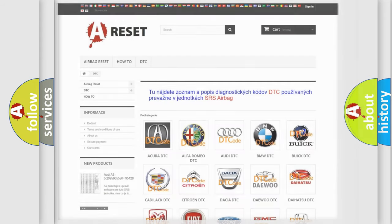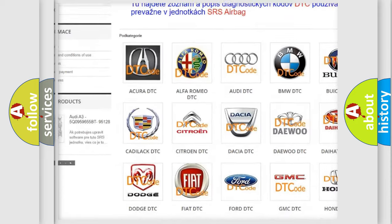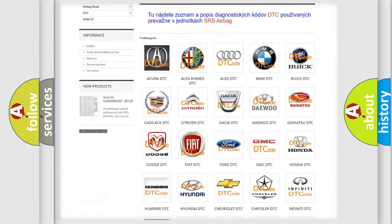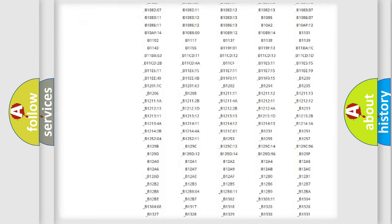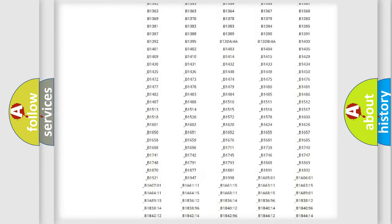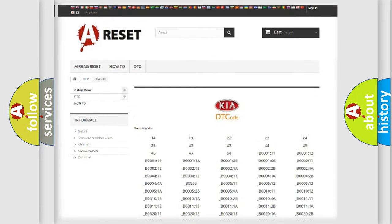Our website airbagreset.sk produces useful videos for you. You don't have to go through the OBD2 protocol anymore to know how to troubleshoot any car breakdown. You will find all diagnostic codes for Kia vehicles and many other useful things.